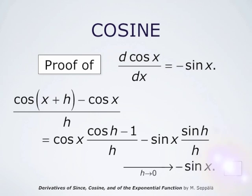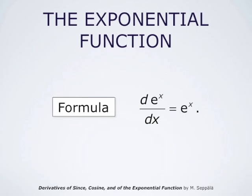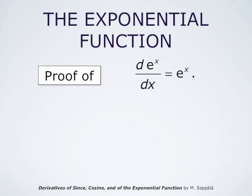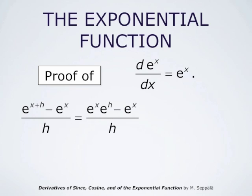This proves the formula saying that the derivative of cosine is negative sine. The derivative of the exponential function is the exponential function itself. Looking at the difference quotient for the exponential function: e to the x plus h minus e to the x, divided by h. Using e^(x+h) = e^x · e^h, this equals e^x times e^h minus e^x divided by h. Taking e^x as a common factor, the difference quotient becomes e^x times (e^h − 1)/h.